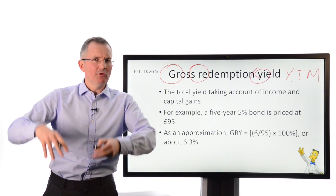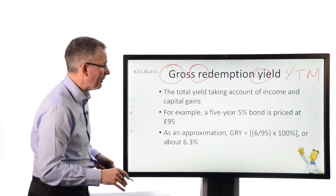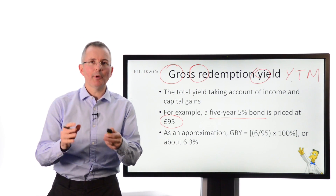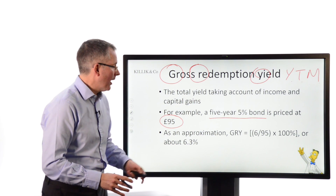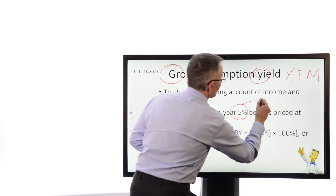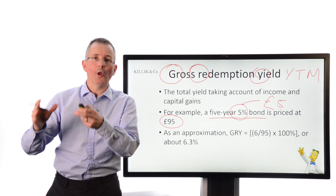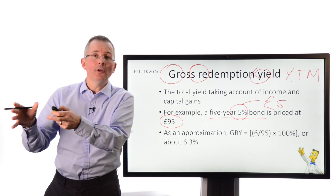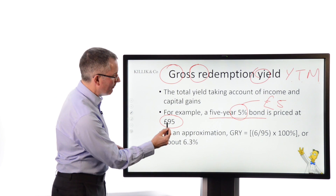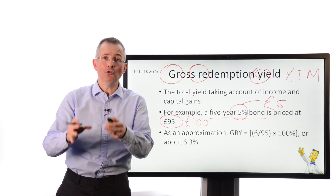Very rough and ready, back-of-an-envelope — slightly ignoring inflation and time value of money — just to illustrate the point. Take a five-year, 5% bond priced at £95, priced below its fixed nominal value of £100. As an approximation, the gross redemption yield would include the annual coupon, which on this bond is around £5. The coupon is calculated on £100 — the fixed nominal amount — not the market price. So it's a fiver.